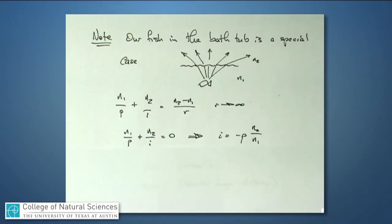So now I have just two terms. I have N1 over P plus N2 over I is equal to 0. If I bring one of these over to the other side and take the inverse of both sides, I have I is equal to minus P times N2 over N1.